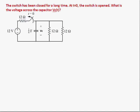Okay, let's look at a few examples with transient analysis. Here we have a circuit with a DC source of 12 volts, a resistor 12 ohm, 12 ohm, 12 ohm, and a capacitor 1 sixth of a farad.